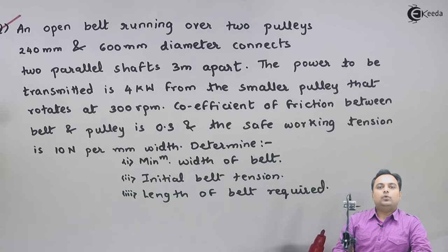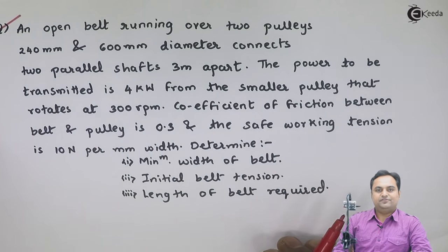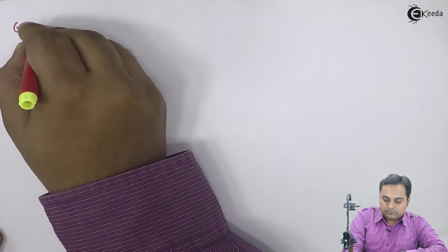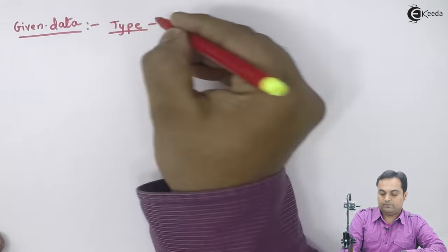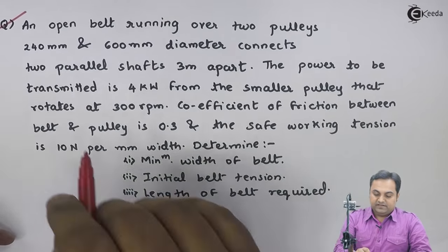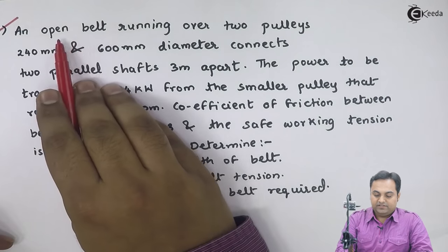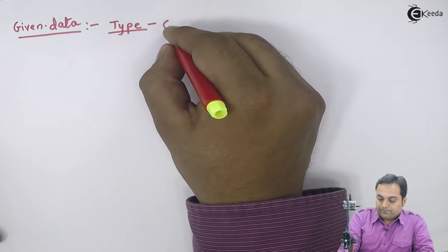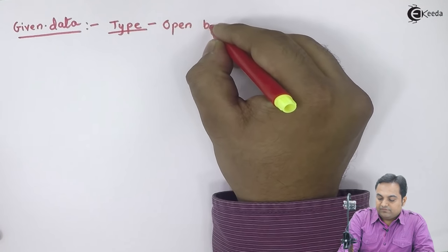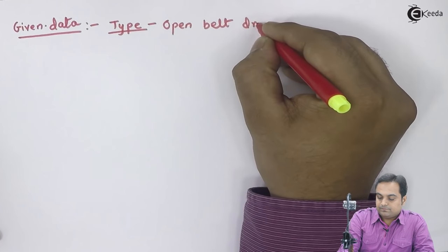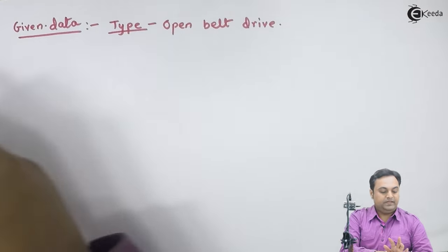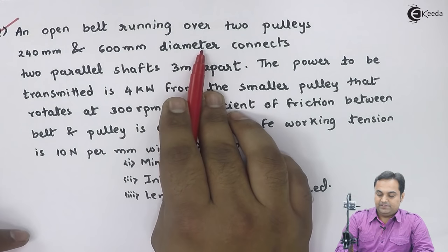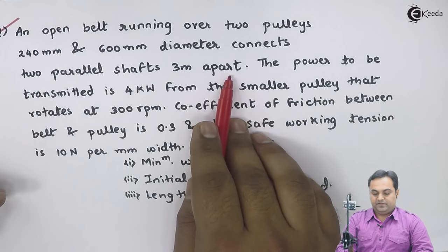This is the question which we have. I will write the given data first. It is an open belt drive running over two pulleys 240 mm and 600 mm diameter, connecting two parallel shafts 3 meters apart. One of the diameters is 240 mm and the other is 600 mm. I'll draw the diagram for this.